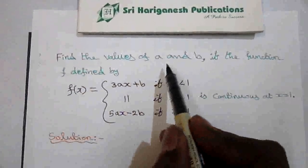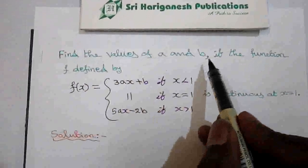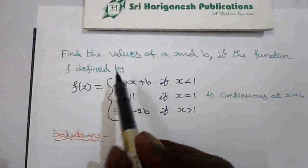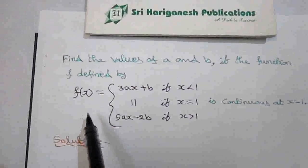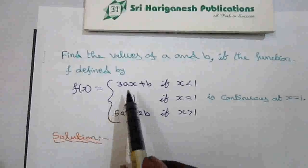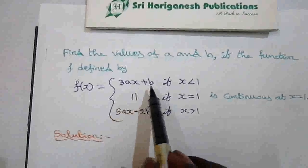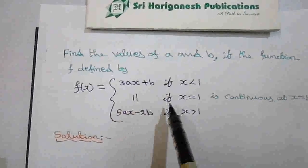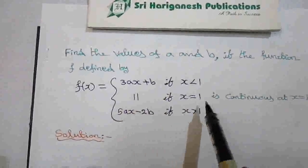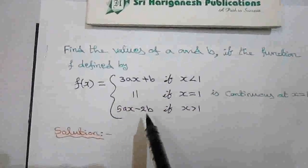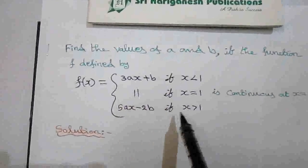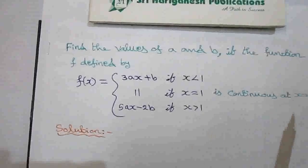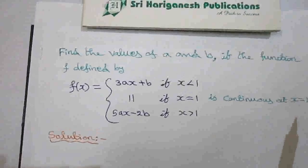Find the values of a and b if the function f defined by f(x) equals 3ax plus b if x is less than 1, 11 if x is equal to 1, and 5ax minus 2b if x is greater than 1, is continuous at x equal to 1.